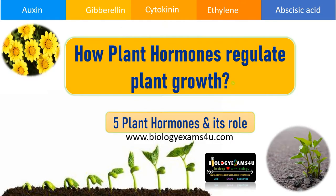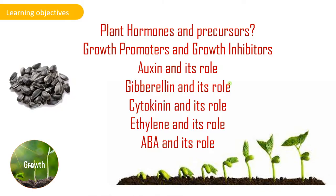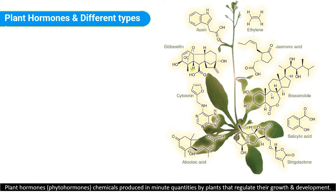Welcome to biology exams4u.com. Today's topic is how plant hormones regulate plant growth and development. Within five to ten minutes, you will have a clear understanding about plant hormones and their precursors, how they are classified as growth promoters and growth inhibitors, and the role of major plant hormones: auxin, gibberellin, cytokinin, ethylene, and ABA.